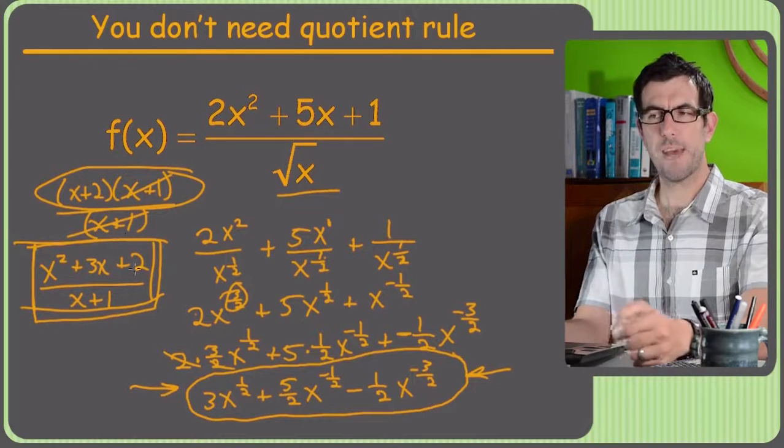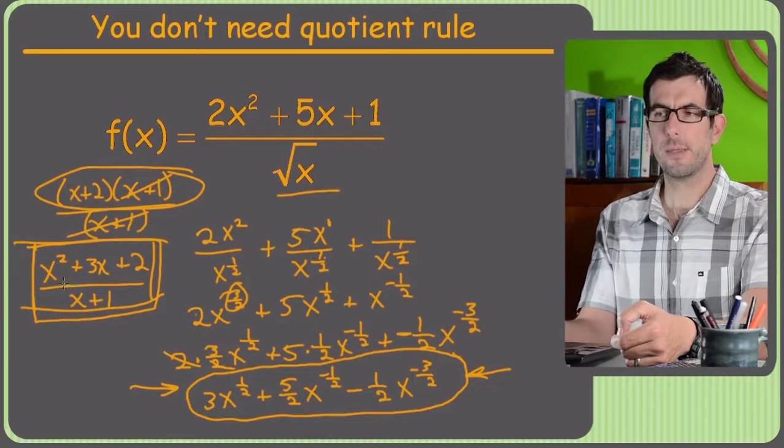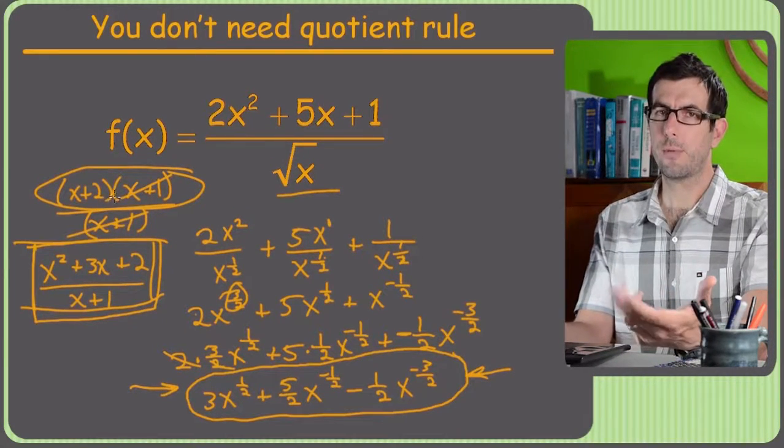And the x plus 1 would cancel the x plus 1, and it would be really simple. I would just have an x plus 2 to take the derivative of, which is 1.